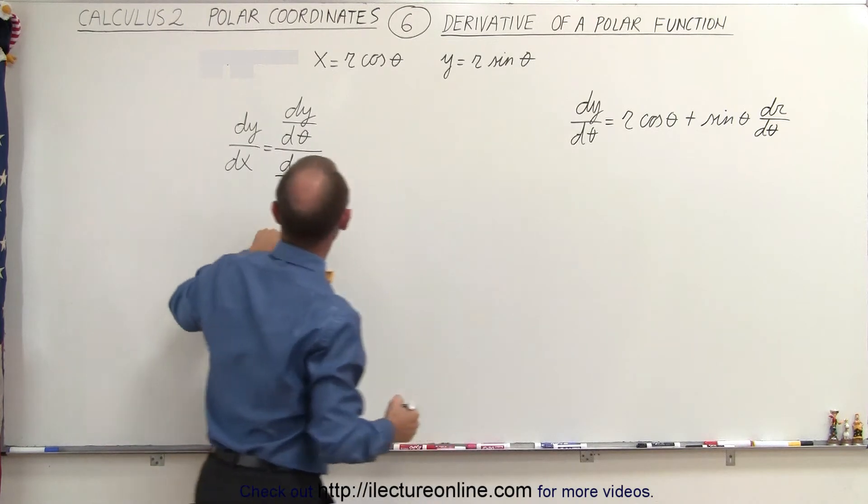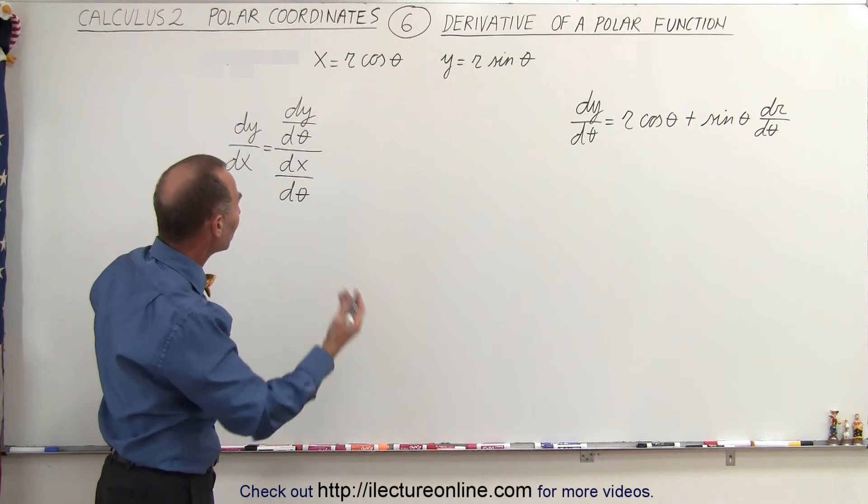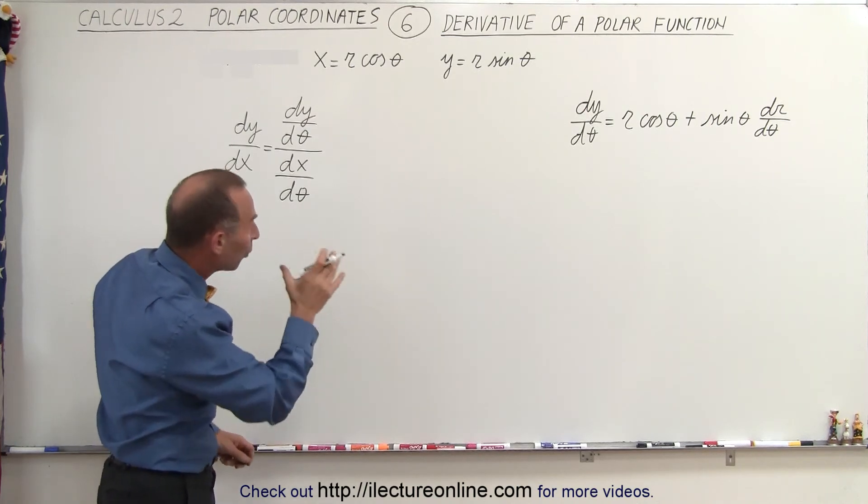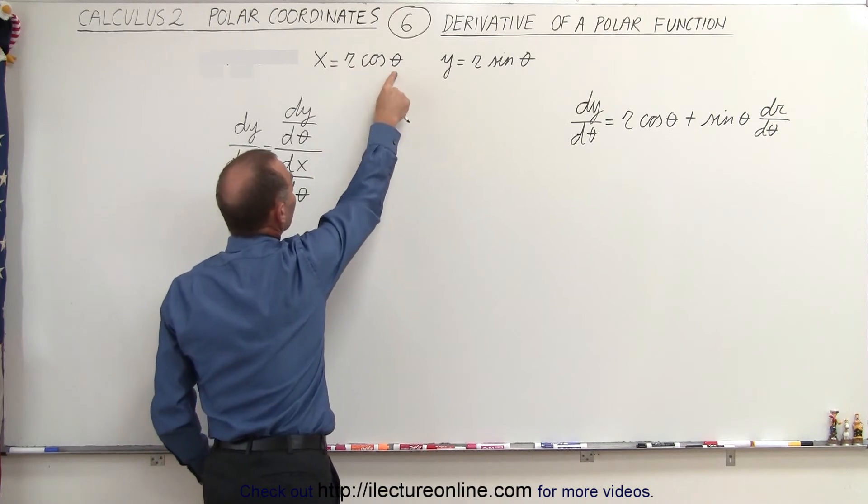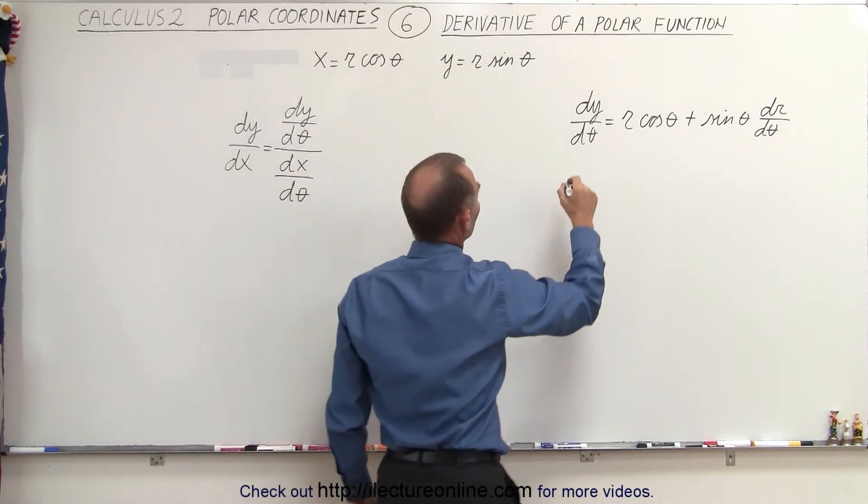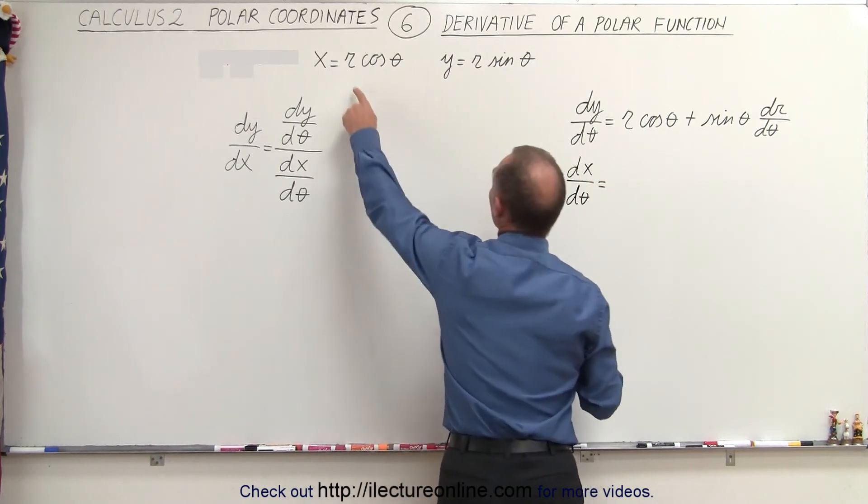Then we do the same for the denominator dx/dθ. We take the function x equal to r cosine theta and we take the derivative of the right side with respect to theta. Again, there's two variables, r and theta, so we have the product rule. So we can write that dx/dθ is equal to the first, which is r,